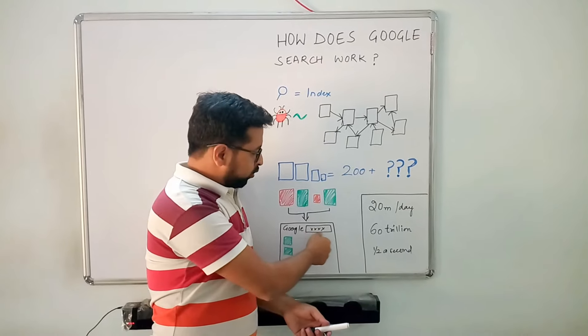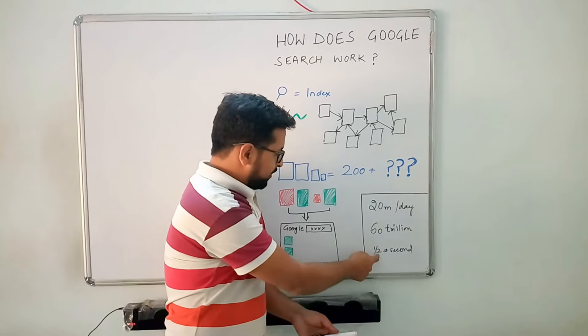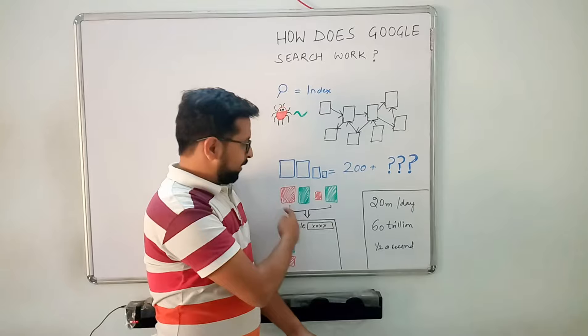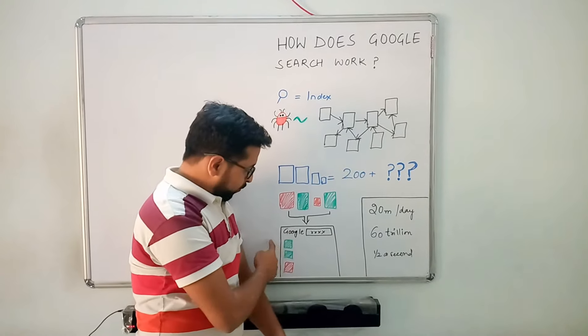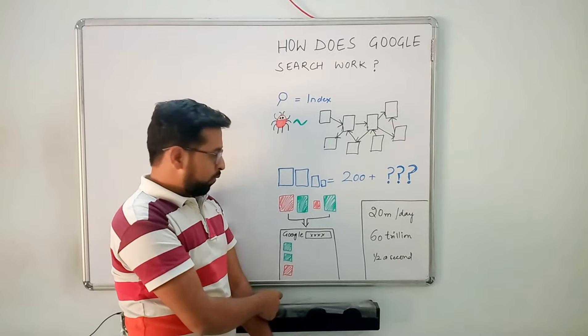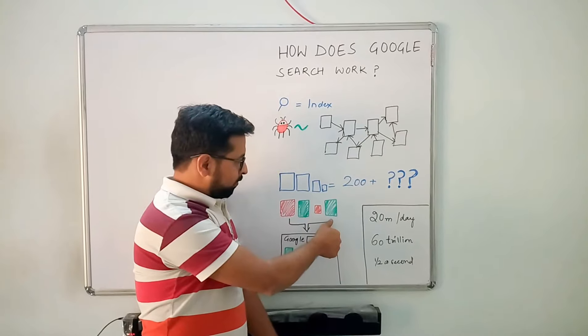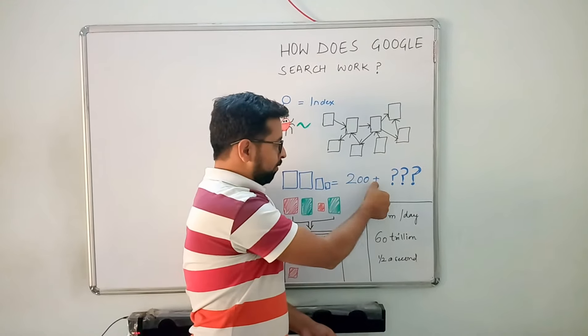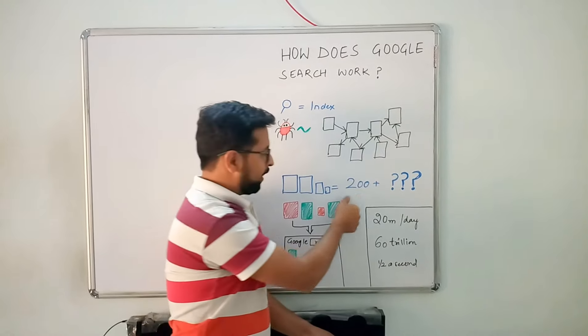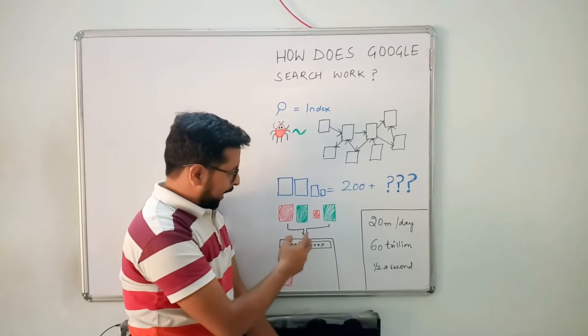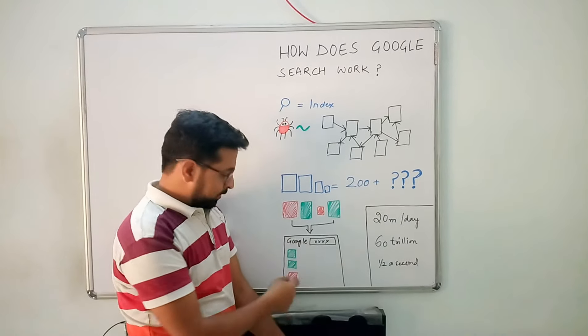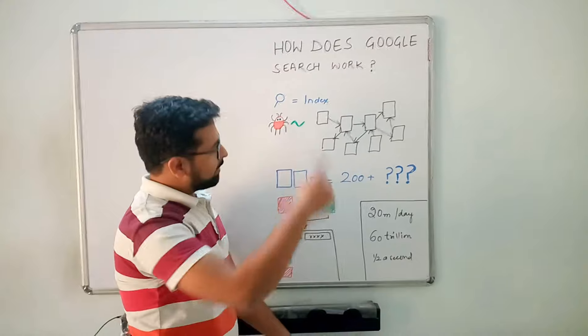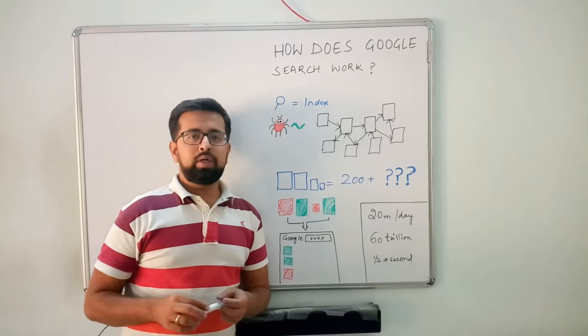When you search for something on Google, in half a second, Google is able to produce the right results based on those answers. The pages where Google received the most positive or relevant answers are shown at the top, and the less relevant ones are shown at the bottom. That's exactly how Google search works.